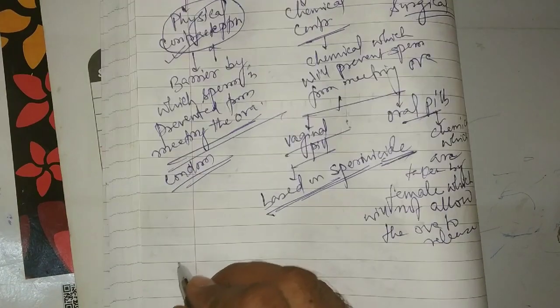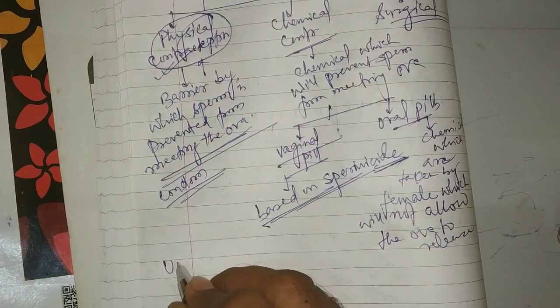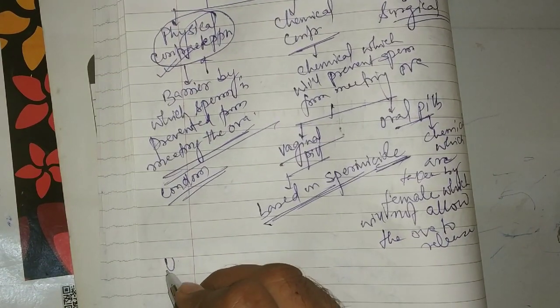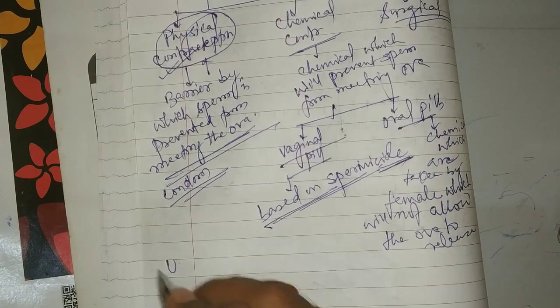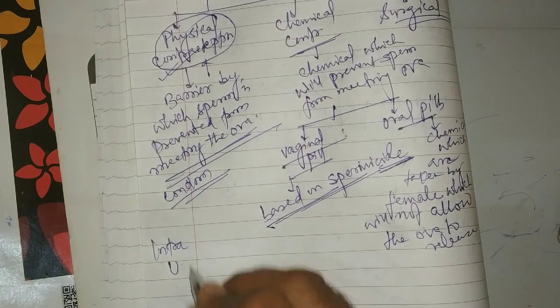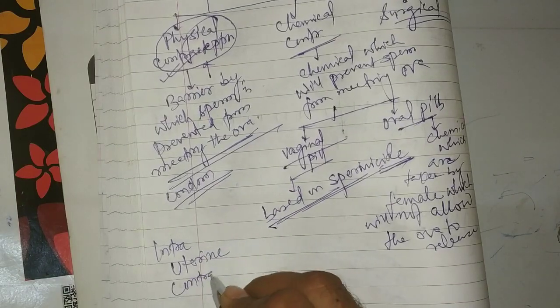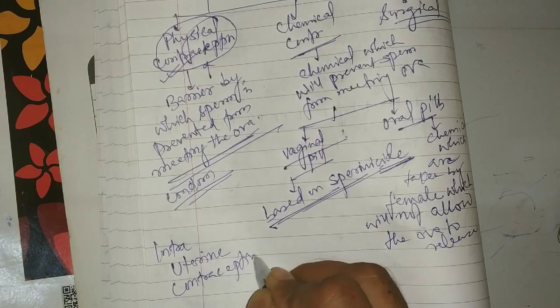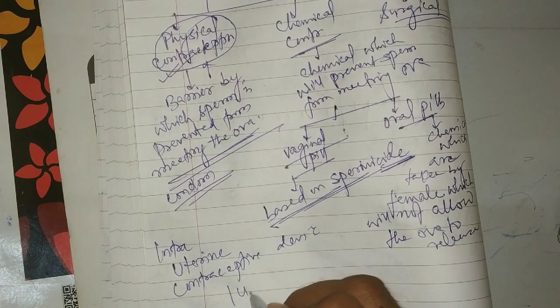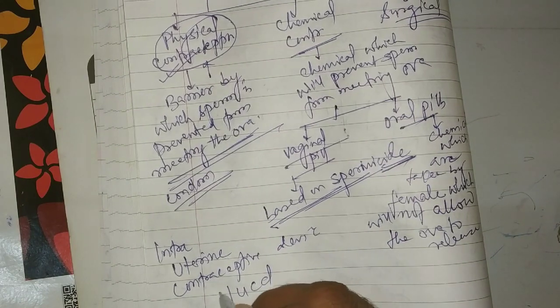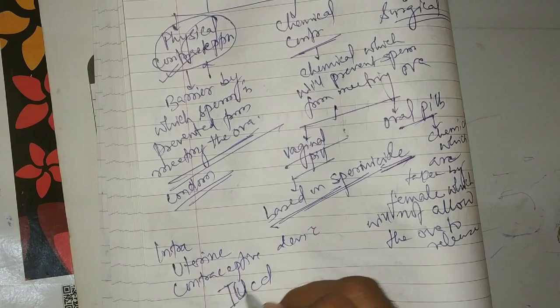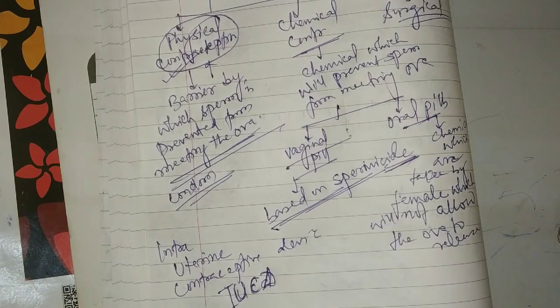An intrauterine contraceptive device is called intrauterine contraceptive device. We call it IUCD.